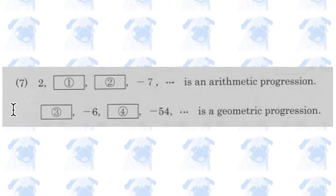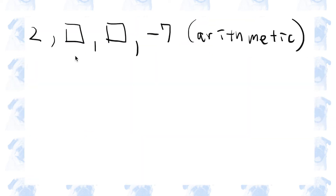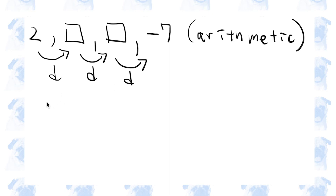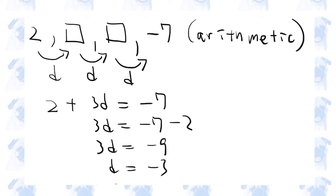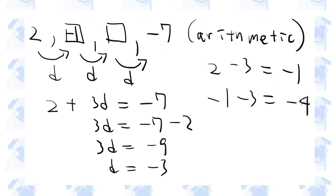Number 7. This is an arithmetic progression. In an arithmetic progression, the difference between one term and the next stays constant. That means 2 plus 3d equals minus 7, so the common difference is minus 3. Thus, 2 minus 3 is minus 1, and minus 1 minus 3 is minus 4.